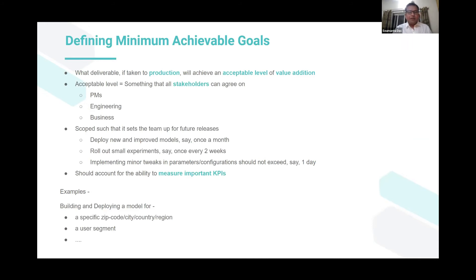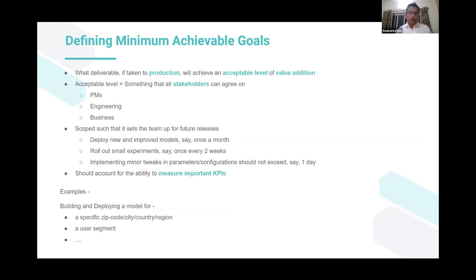For example, if you're working on a machine learning model and that product is present in, say, 50 countries, for the minimum achievable goal you needn't prioritize all 50 countries — you could just start with one country and prioritize that. Or you could prioritize a particular continent, certain cities, or even look at it from a demographic perspective, identifying a particular user segment and focusing on that first rather than all user segments. This helps prove value because there's always a certain amount of unexpected returns as far as machine learning is concerned, and this approach typically helps solve that problem.